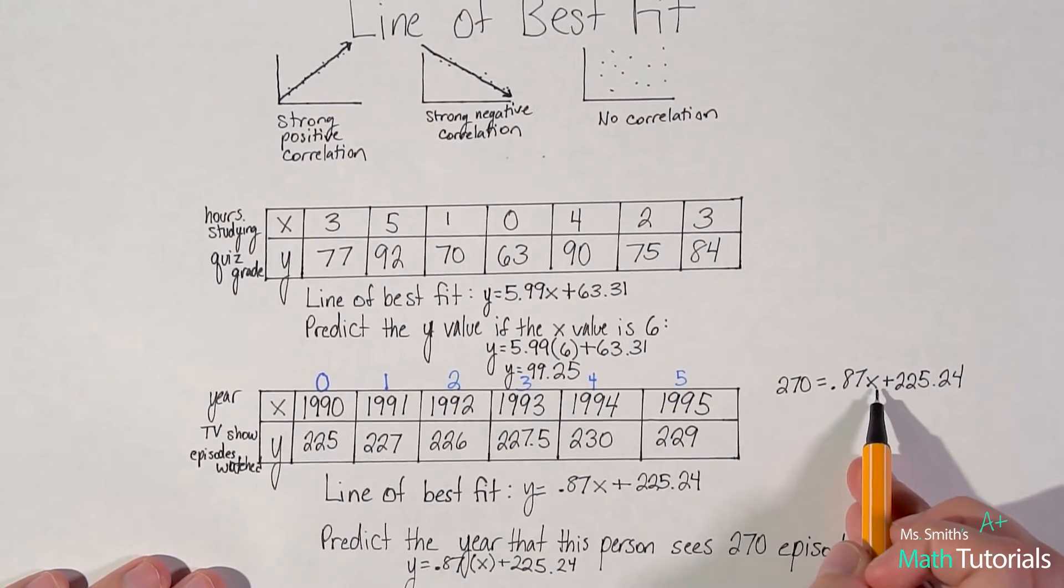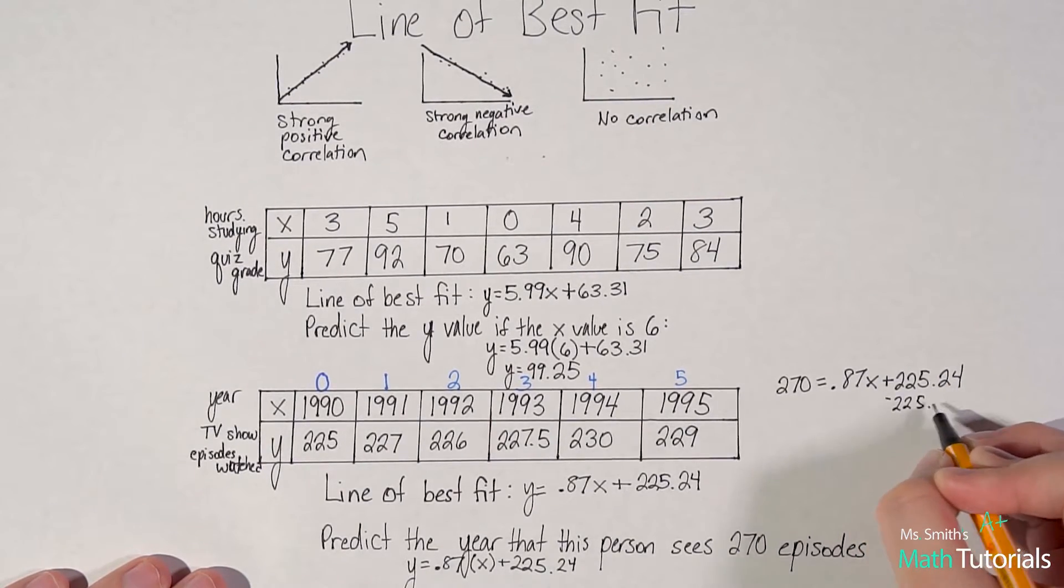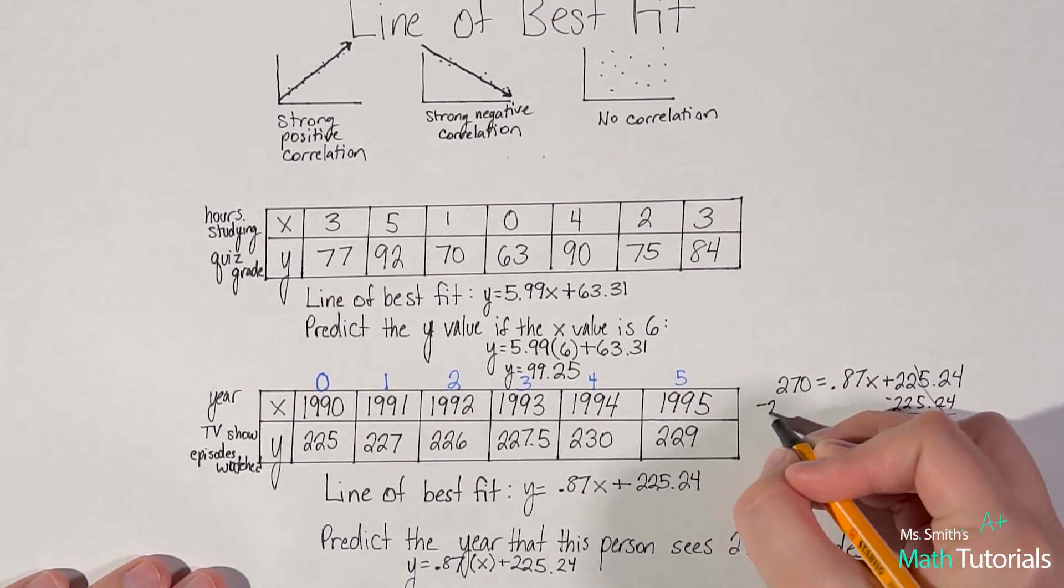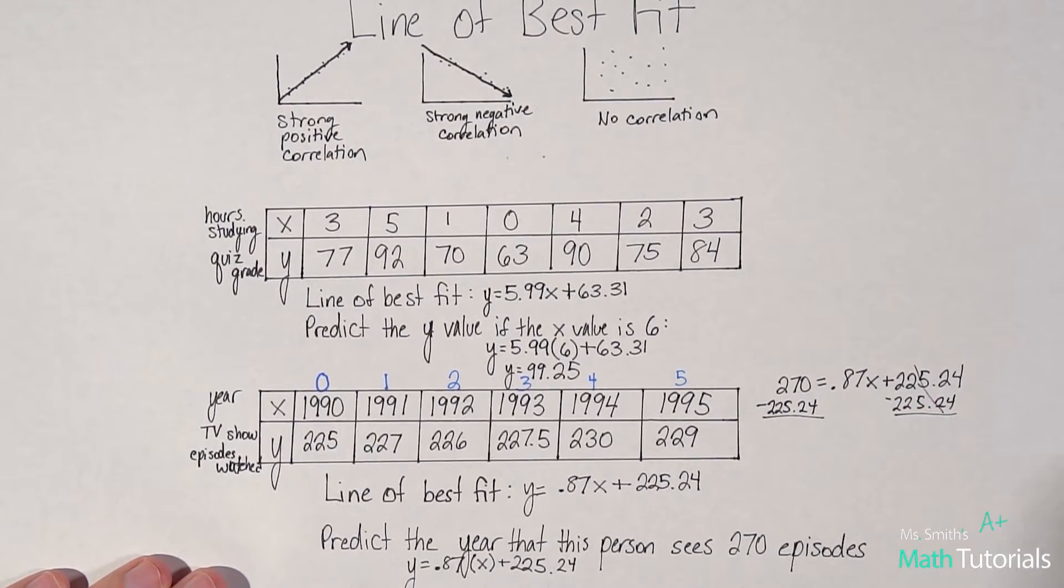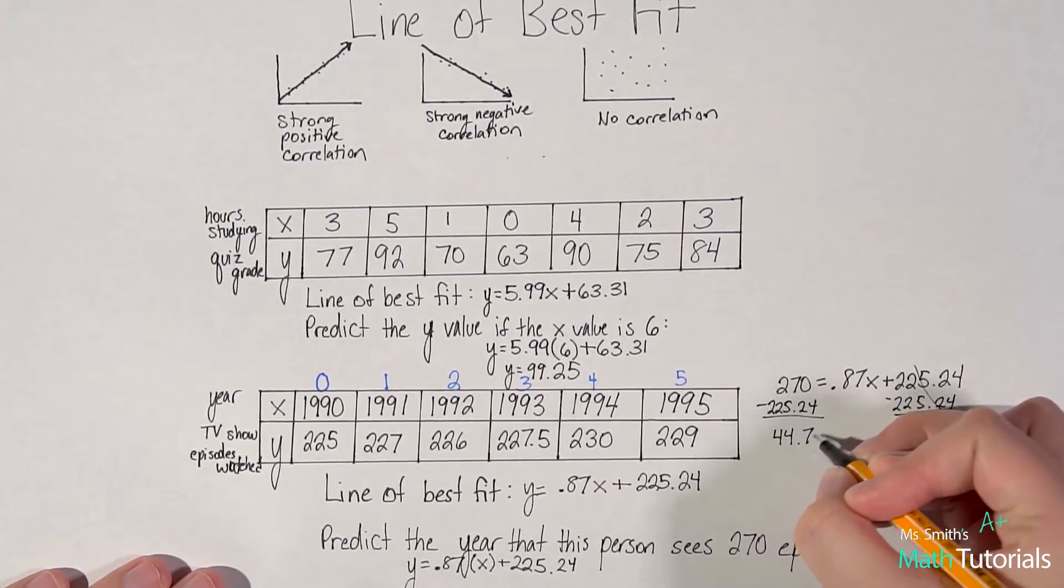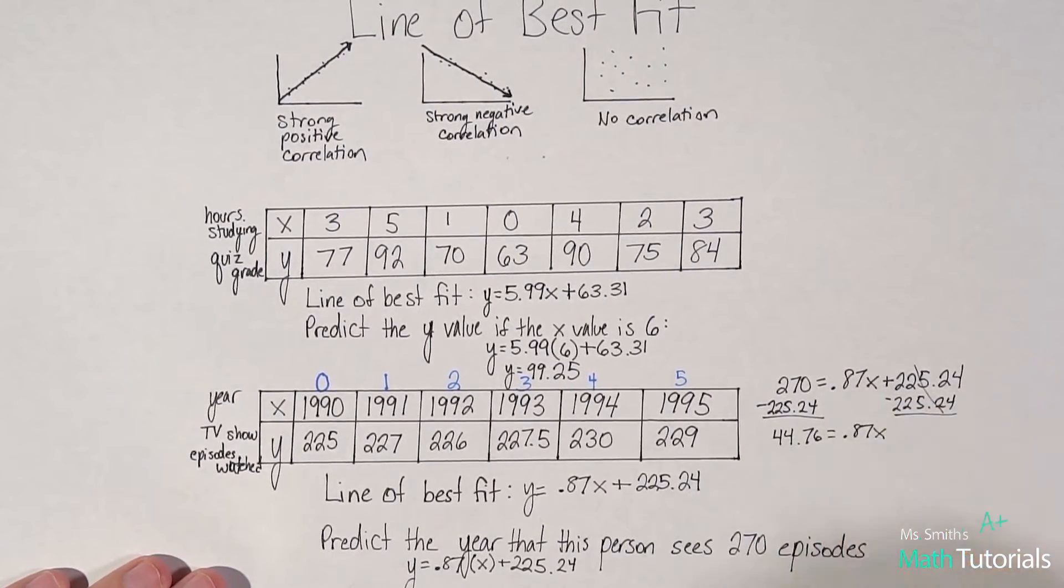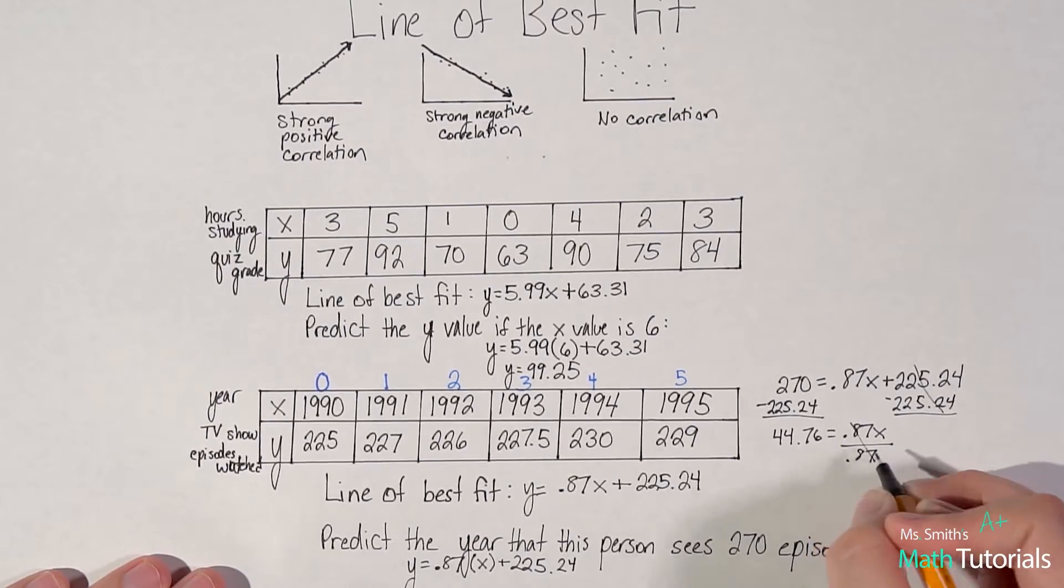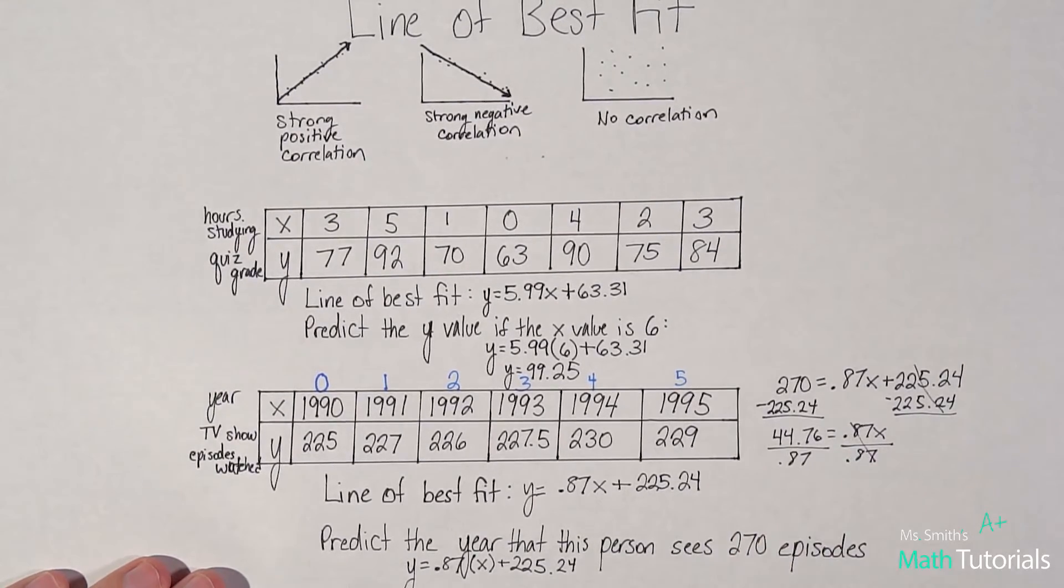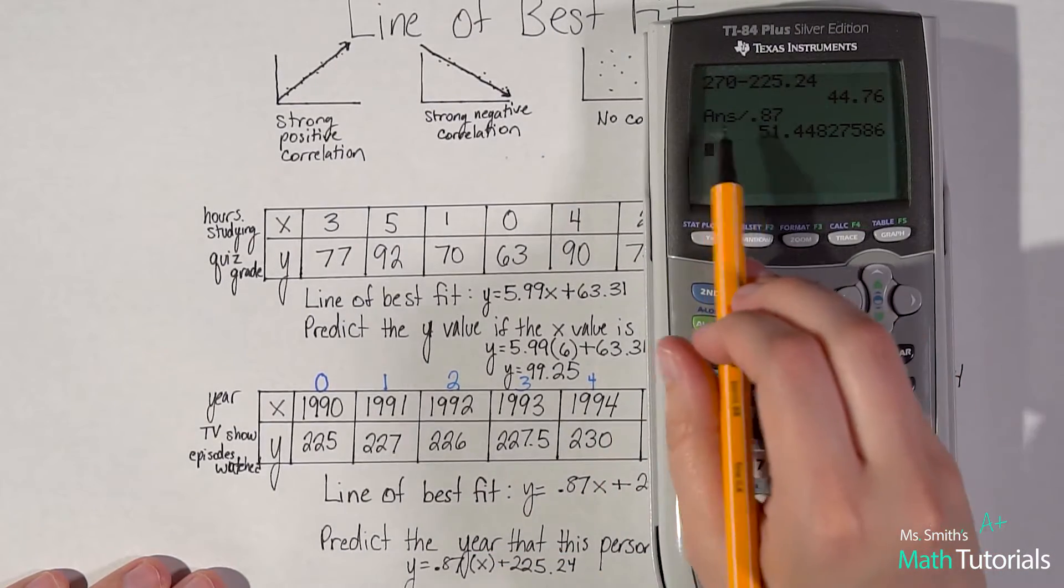Now I'm going to solve for x. I need to get x alone. This is just basic algebra. I want to move this 225.24 over. Move it over to this side. 270 minus 225.24. That would be 44.76 equals 0.87x. Those two are being multiplied together. If I want to undo that, I would divide by 0.87. And I get a huge, I just took my answer and divided by 0.87. I get a long decimal.